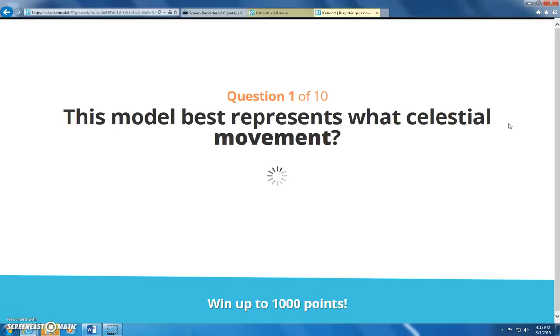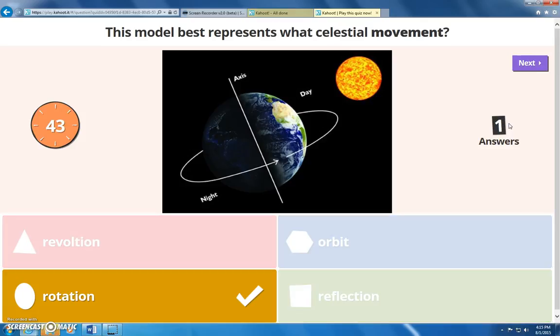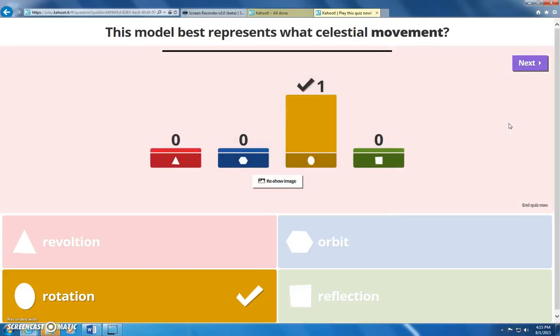These first few questions are going to be a little review on everything that we've learned about the earth and how it interacts with the sun and the moon. This model best represents what celestial movement? What is the earth doing in this image? Yep, it is rotating. Rotating on its axis.